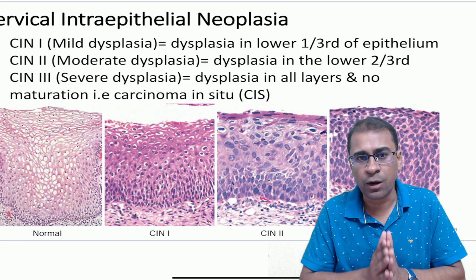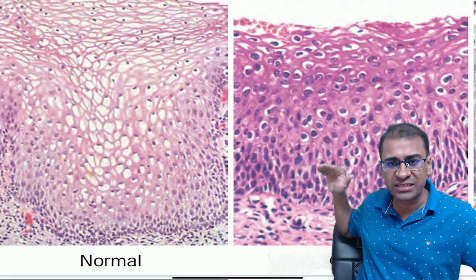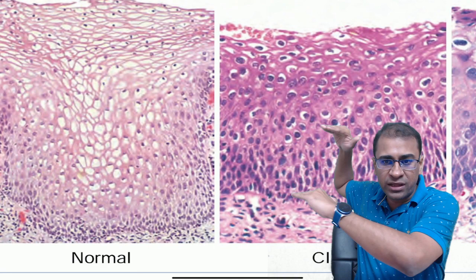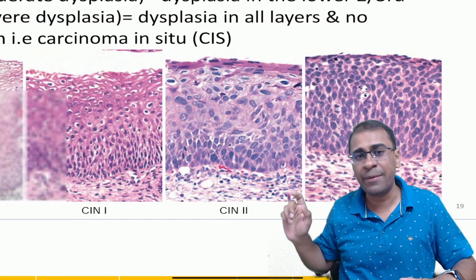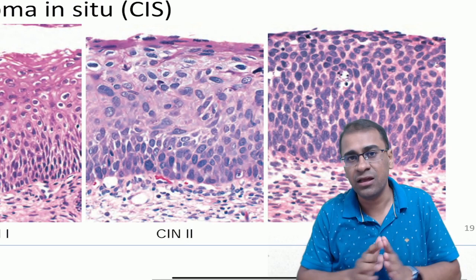A very important concept in the cervix is cervical intraepithelial neoplasia, called CIN. This is normal epithelium. Now look in this area — this lower one third has hyperchromasism, pleomorphism, high N:C ratio. We call it CIN 1, also known as mild dysplasia. The lower two thirds involvement is called CIN 2, and full thickness involvement is called CIN 3. Remember, the nomenclature has now changed — CIN 1 is called low-grade squamous intraepithelial lesion, whereas CIN 2 and 3 are called high-grade squamous intraepithelial lesion.